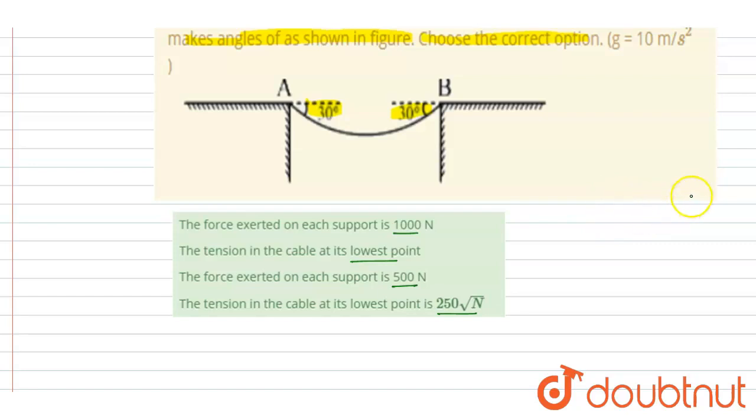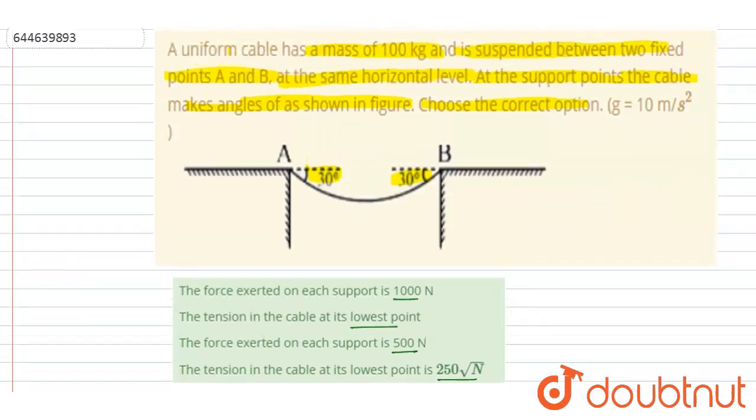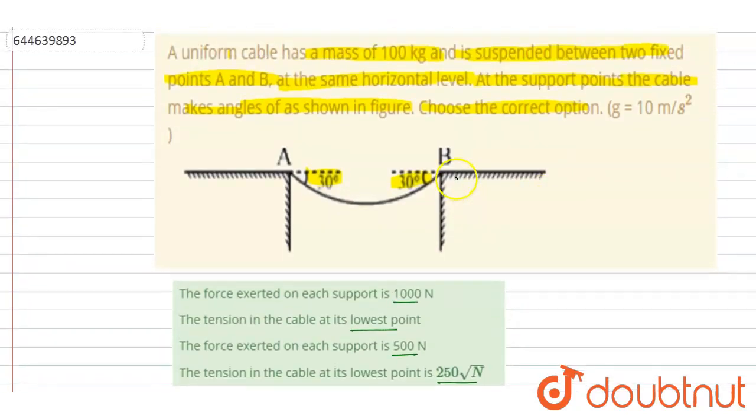So if you see, let us find out the tension at this point and the lowest point. At the point where it is fixed, tension will be in this direction, and this angle will also be equal to 30 degrees. In downward direction, the weight will act, mg, that is 1000 newtons.